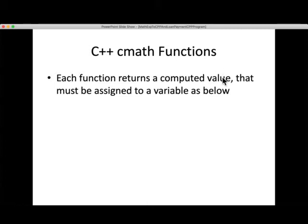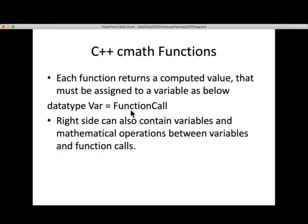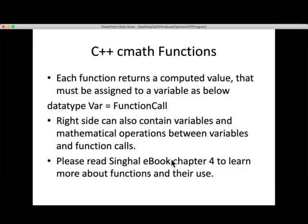Math functions that will be used here: each function returns a computed value that must be assigned to a variable. We will have a data type that's returned by the function, the variable on the left side of the assignment operator, and this data type will be the same data type that the function call will return. There has to be some homogeneity. Whatever type the function returns should be the data type here, and then the function call.